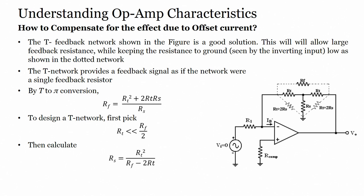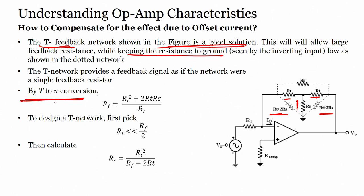To compensate the effect of offset current, a T feedback network shown in the figure is a good solution. This allows a large effective feedback resistance while keeping the resistance at the inverting input to ground low. In the T network, RF = (RT² + 2·RT·RS) / RS.